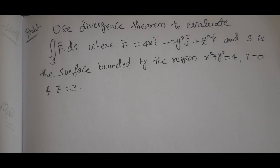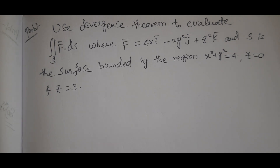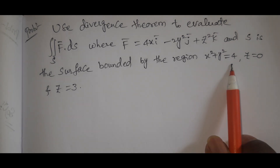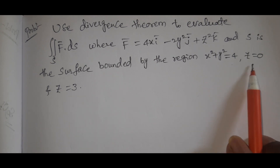We have to use this region. Here x² + y² = 4 is a circle equation, where x² + y² = r². And the z limits are z = 0 and z = 3.